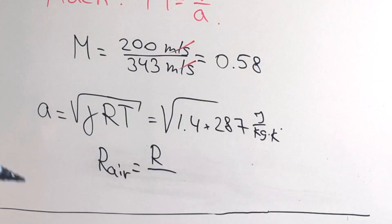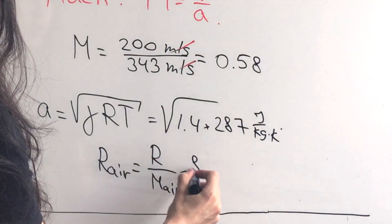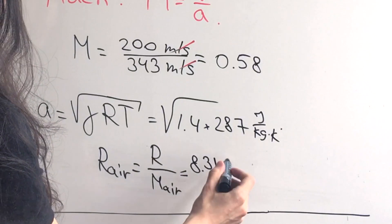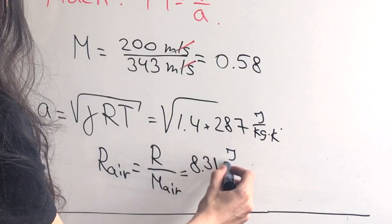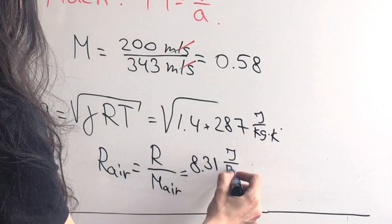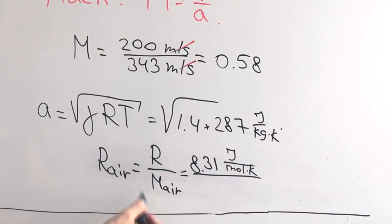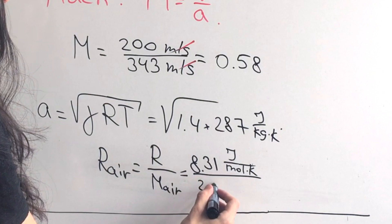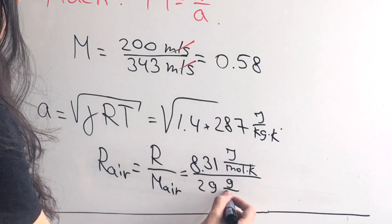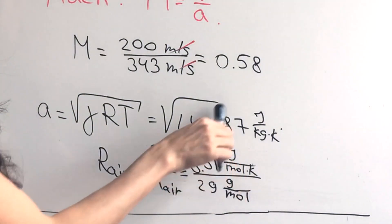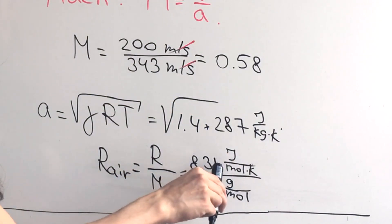For our case, it's gonna be the molar mass of air. Now let's plug in the values that we know. The universal gas constant is 8.31 joules per mole per Kelvin, and the molar mass of air is 29 grams per mole. How do we get such a big value from dividing 8 by 29?